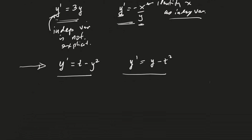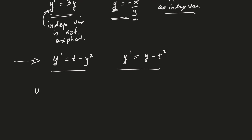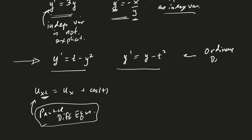There are also differential equations involving functions of more than one variable. For example, u sub xt equals u sub x plus cosine of t, where the subscripts represent partial derivatives. This would be a partial differential equation, and we want to distinguish between partial differential equations and what we'll call ordinary differential equations.